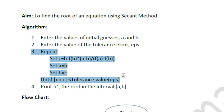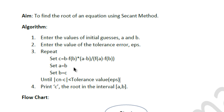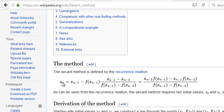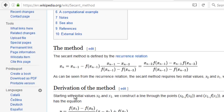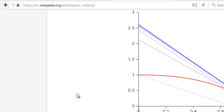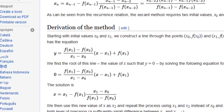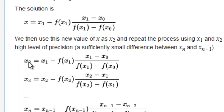The third step is a repetitive step — we use a do-while loop to implement it. Inside the loop we calculate C using the secant method formula, which you can verify on the Wikipedia page. The formula calculates xC equals xB minus f(xB) times (xB minus xA) divided by (f(xB) minus f(xA)). In my program, C represents x2, B represents x1, and A represents x0.